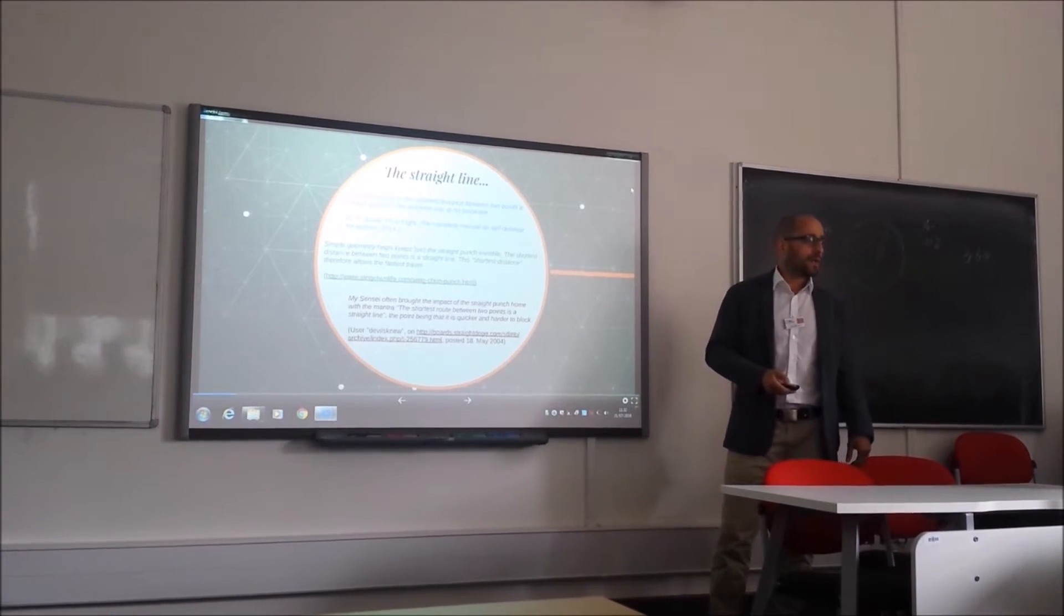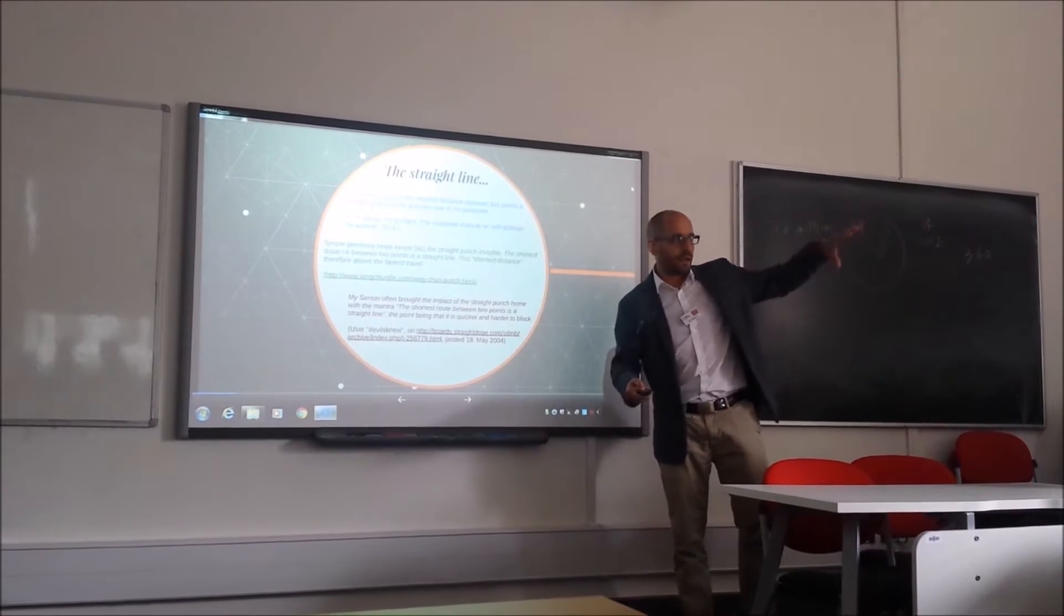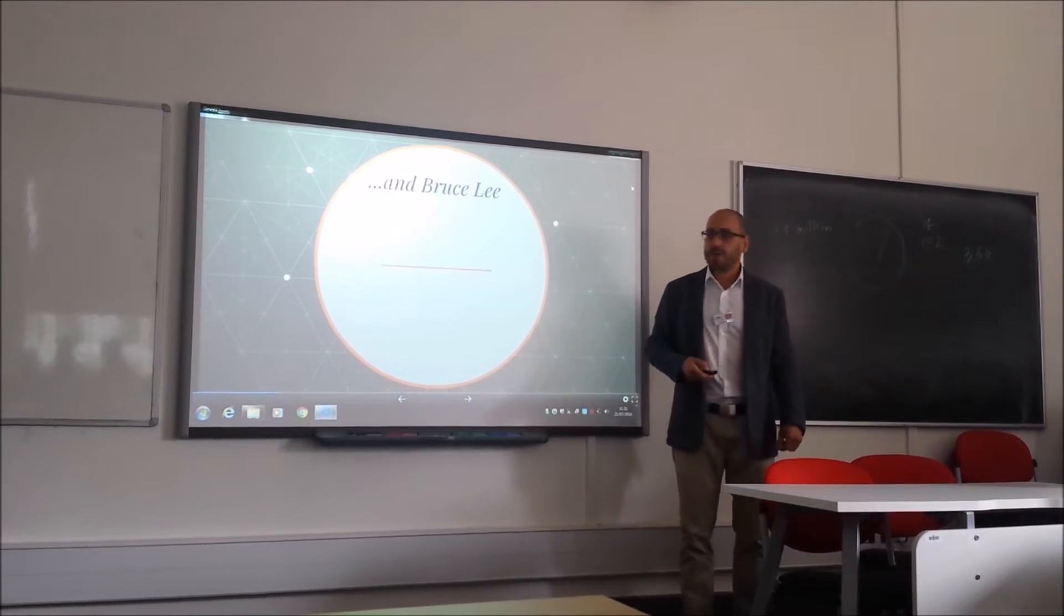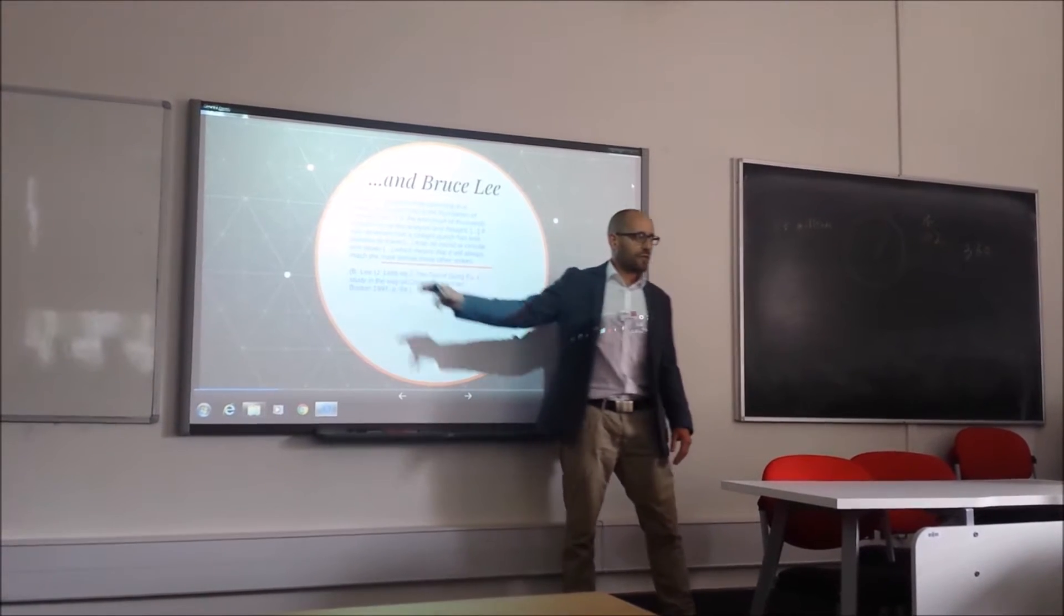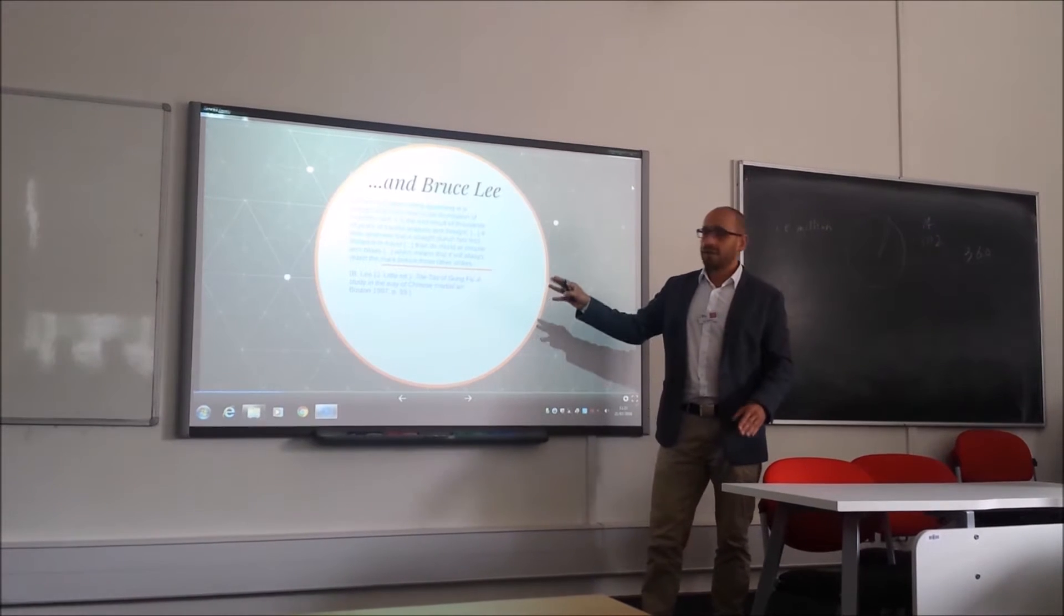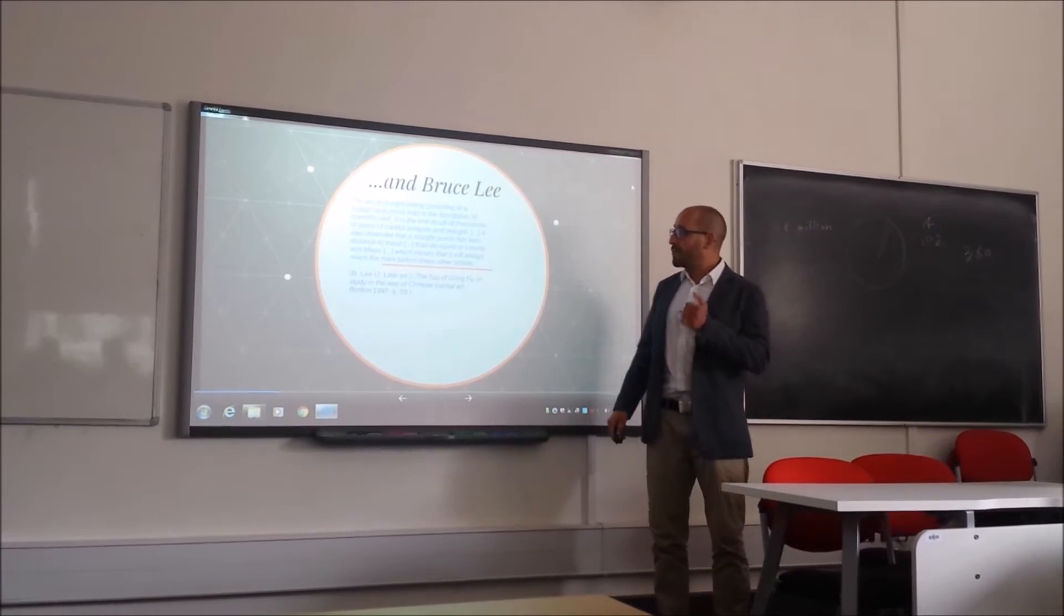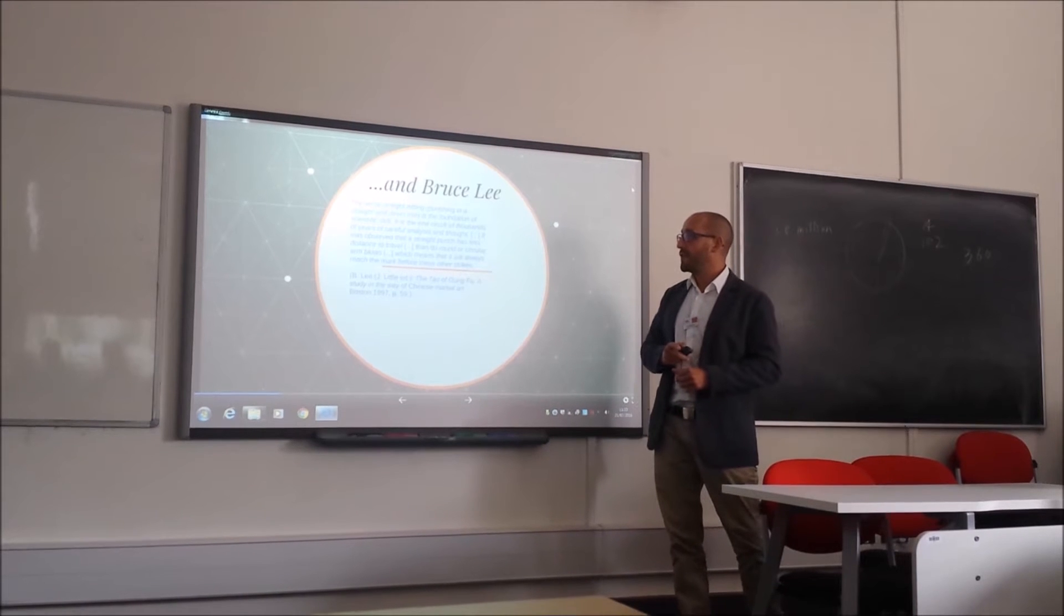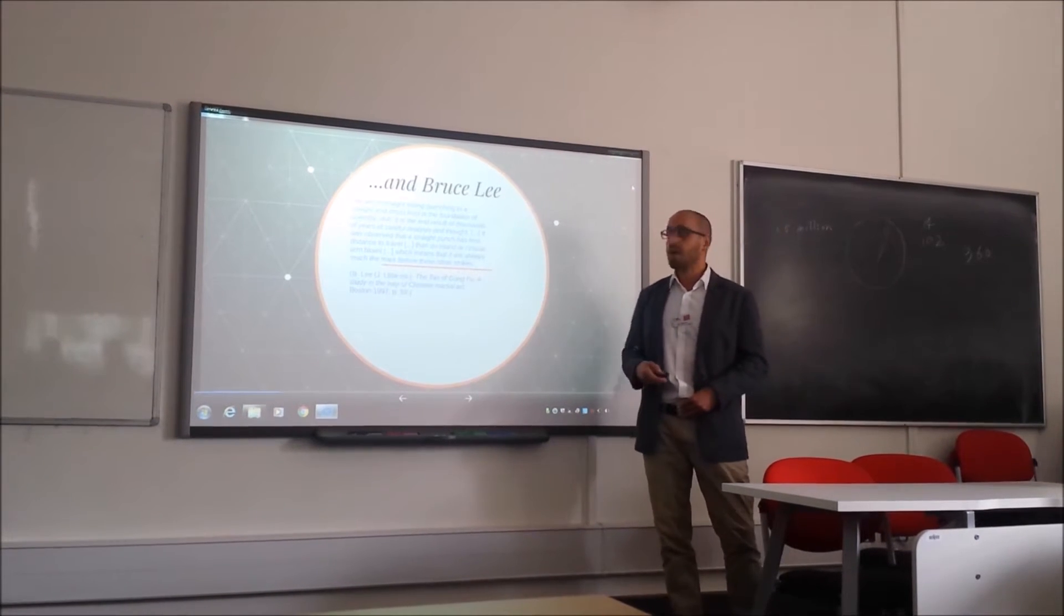Where does it come from? Can we trace a historical source and origin? I suppose many people would have had this idea, but there seems to be a line of thought through the history of martial arts. And I think we can trace that back to Bruce Lee. I have a quote from the Tao of Jeet Kune Do, which was edited from notes Bruce Lee did. The art of straight hitting, punching in a straight and direct line, is the foundation of scientific skill. It is the end result of thousands of years of careful analysis and thought. It was observed that a straight punch has less distance to travel than the round or circular arm blows, which means it will always reach the mark before these others strike.